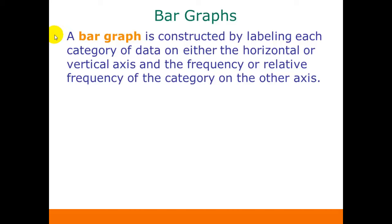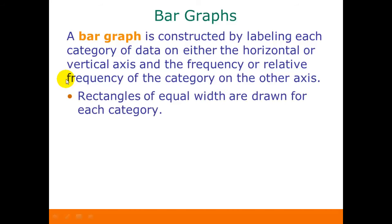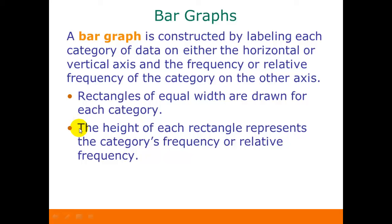A bar graph is a graph that has each category of data represented and labeled usually on the horizontal axis, and the frequencies or relative frequencies are on the other axis. Sometimes you see sideways bar graphs, but in this course, most of the time, you'll see your categories labeled on the horizontal axis and the frequencies on the vertical axis. We draw rectangles of equal width for each category, and the height of each rectangle represents the category's frequency or its relative frequency.